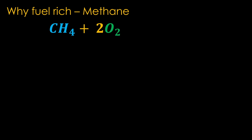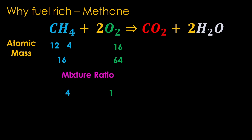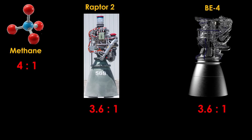We can do the same analysis with methalox engines — those that burn liquid methane and liquid oxygen. The combustion is a bit more complex, as there are two separate reactions: the carbon in methane plus one oxygen molecule gives carbon dioxide, and the four hydrogens plus another oxygen molecule give two water molecules. Carbon has an atomic mass of 12 and the four hydrogens have a mass of 4, so that's 16 for the fuel and 64 for the oxygen, giving a complete combustion ratio of 4-to-1. Looking at the Raptor from SpaceX and the BE-4 from Blue Origin, they both run at about 3.6-to-1 — closer to the expected ratio than hydrogen, but still fuel-rich.